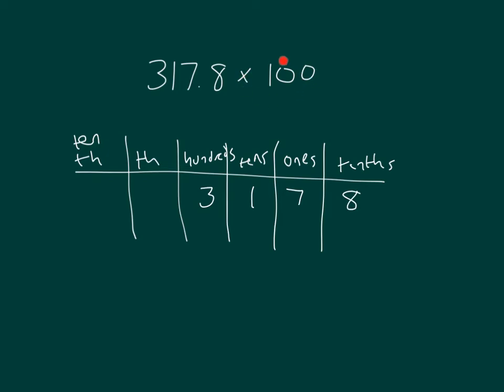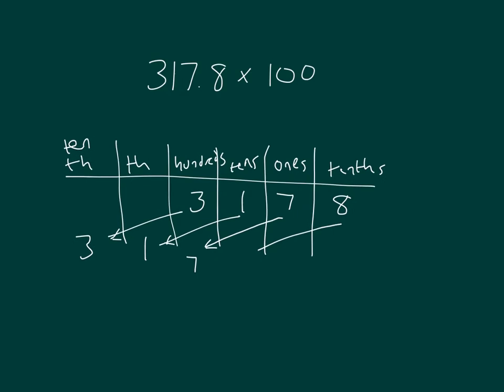Now I'm multiplying by 100. So each of the hundredths becomes 10,000. And I multiply 1 ten by 100, it becomes 1,000. Our ones become hundreds. And our tenths, those become tens. So I have the number 3,178 and a 0 inside of the ones place. So that's 31,780.